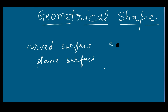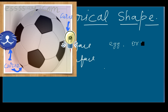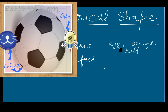We usually notice objects having curved surfaces around us. As you can see in this image, objects like a ball, orange, and mango are very common objects which we notice around us. If you touch the surface of these objects, you will feel the nature and property of a curved surface.